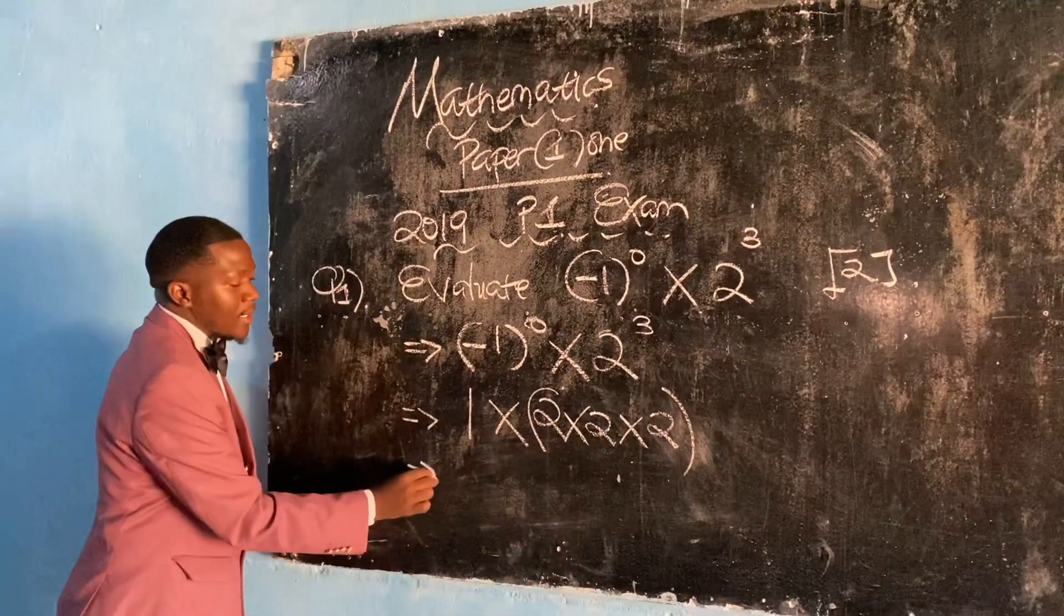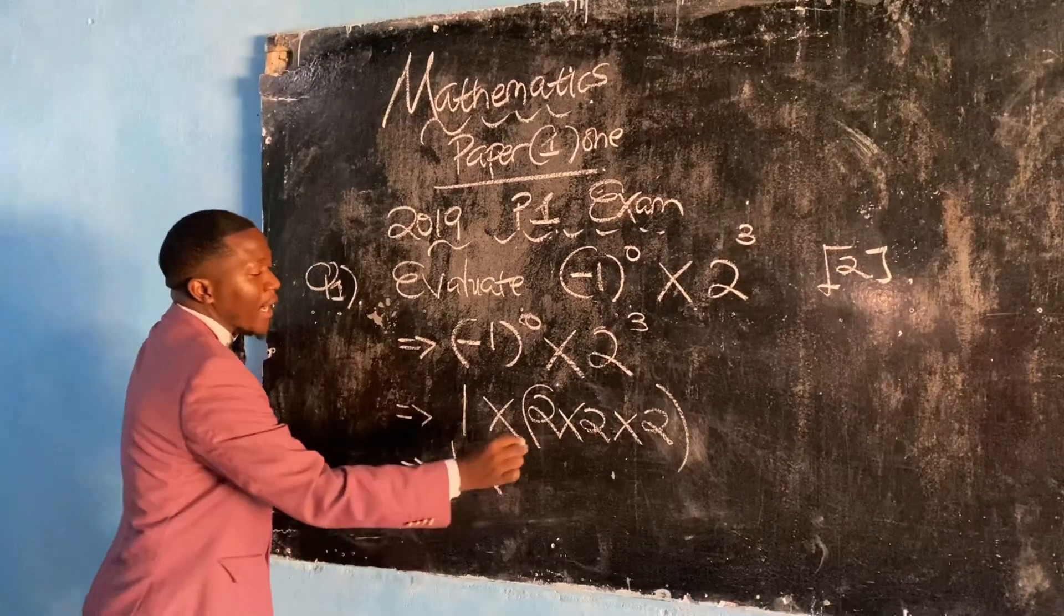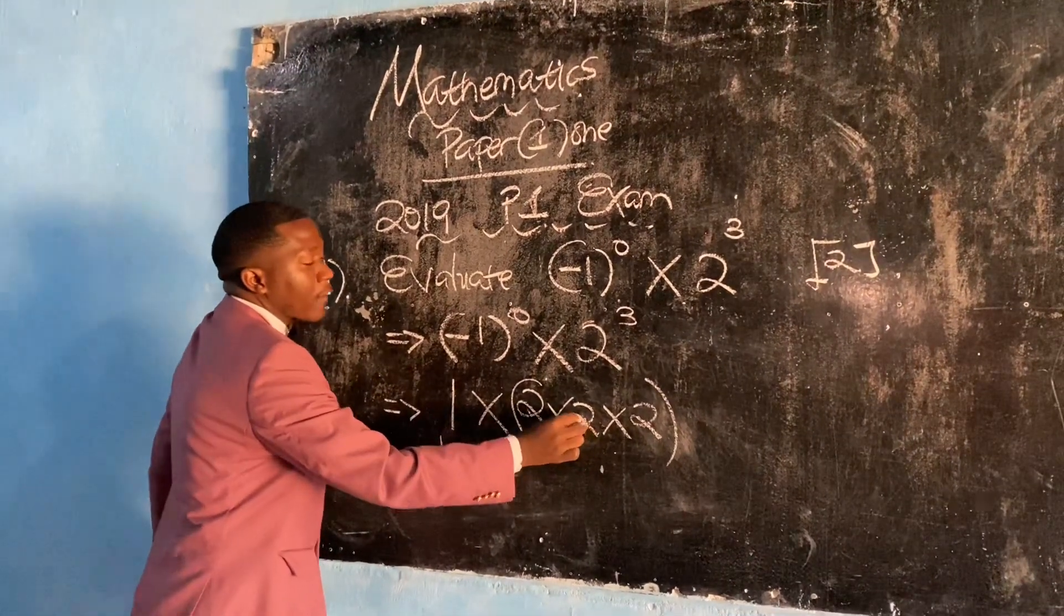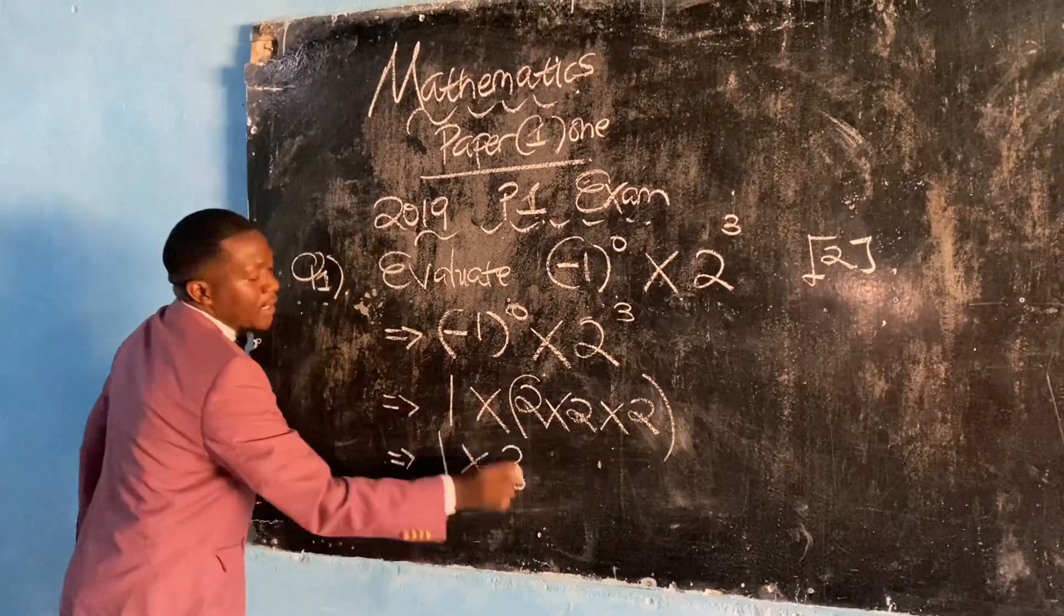Then, this is the same as 1 × 2 × 2, that's 4, times 2, that is 8.